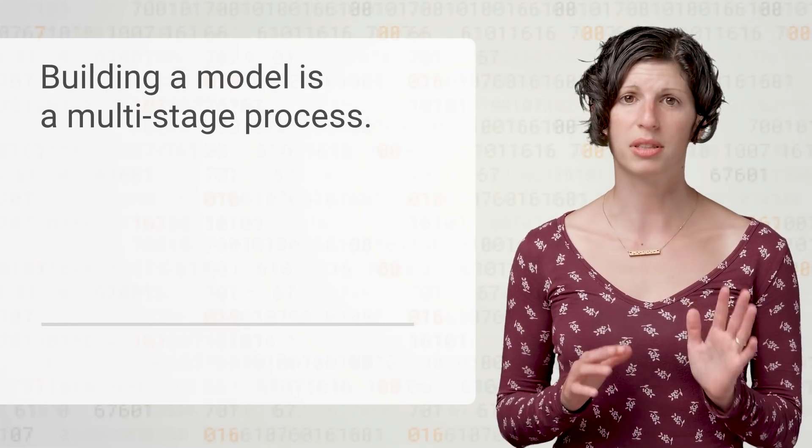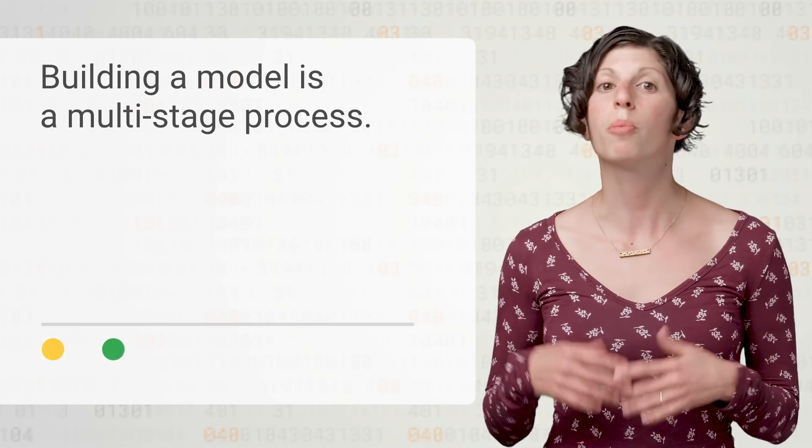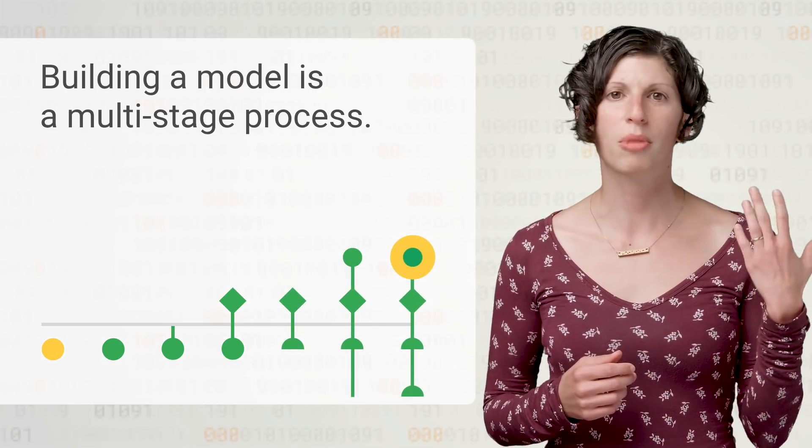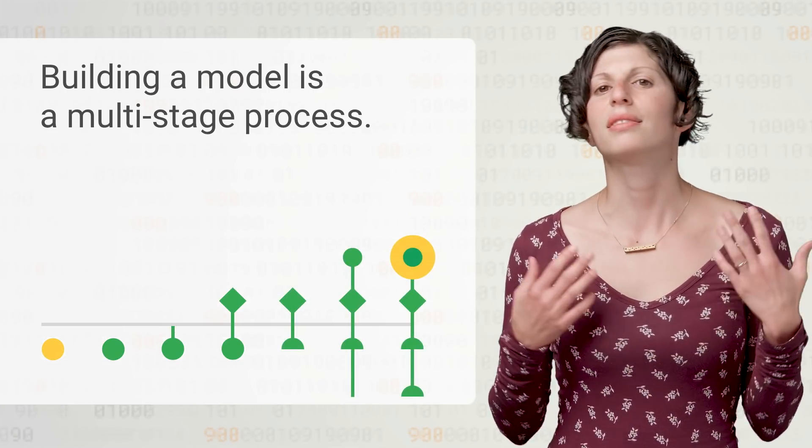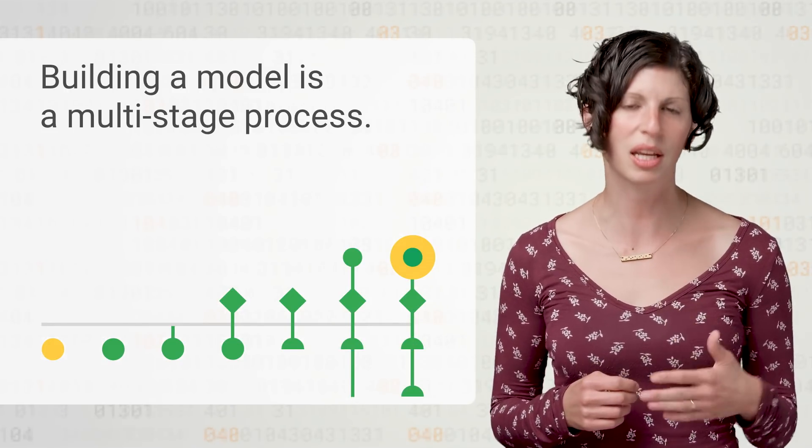Building a machine learning model is a multi-stage process. You have to collect, clean, and process your data, prototype and iterate on your model architecture, train and evaluate results, prepare your model for production serving, and then you have to do it all over again, because the model is a living thing that will have to be updated and improved.